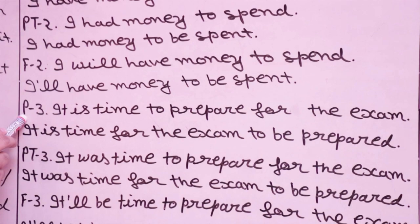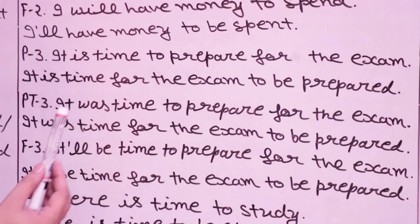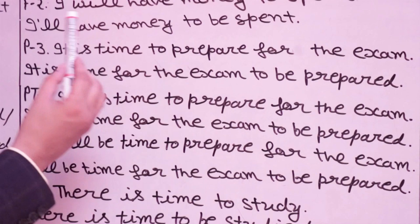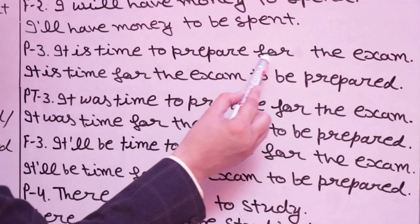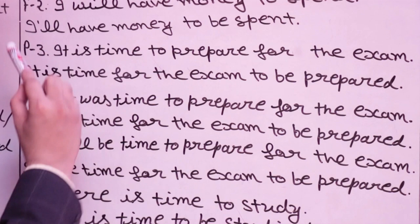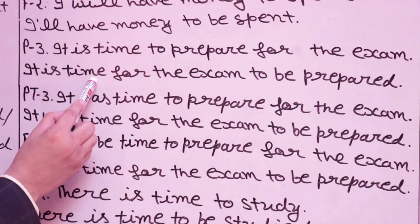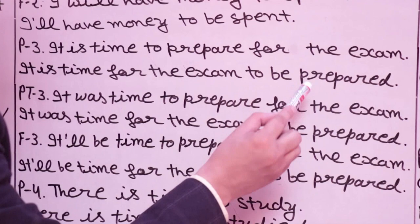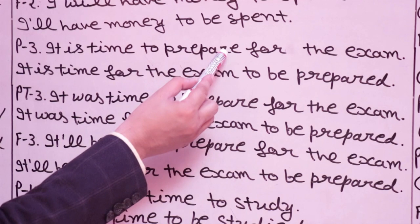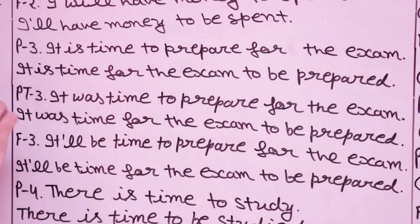P3 shows state of being — for example 'I am a teacher,' 'he is a student.' For P3 passive: 'It is time to prepare for the exam' becomes 'It is time for the exam to be prepared.' Both give the same meaning. The tense is the same — P3 active and P3 passive — only the structure changes.